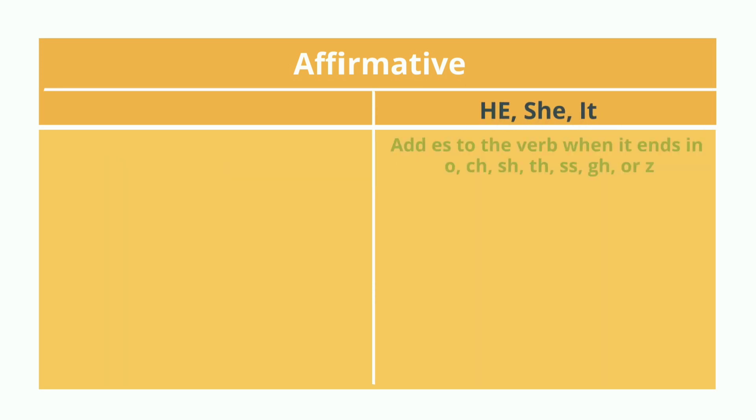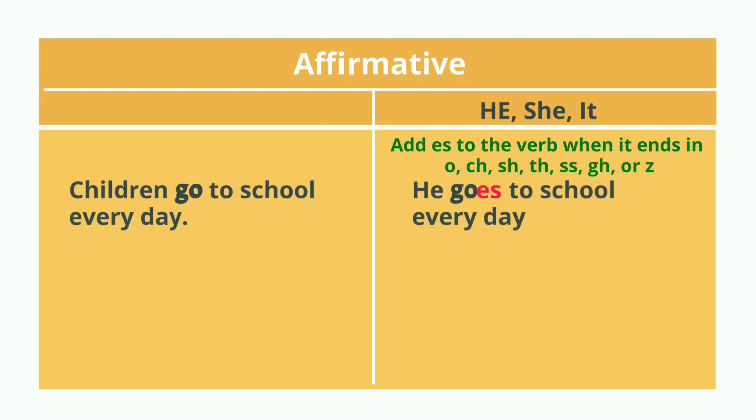Well, sometimes you have to add ES instead of S, and that is when the verb ends in any of the following. For example, Go becomes goes. Children go to school every day. He goes to school every day. Wash becomes washes.